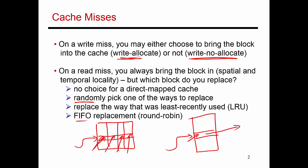What is more commonly done in modern processors is something smarter, referred to as the least recently used policy, or LRU policy. It keeps track of recent accesses to every set and which ways were touched most recently and least recently. In a four-way cache, a separate bookkeeping data structure tracks, for example, that way three was touched most recently, then way four, then way two, and way one was touched least recently. When a cache miss occurs and a new block comes in, way one — the least recently used — is evicted to make room.